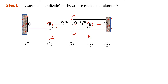Once we have the nodes, we can connect them. Between node 1 and node 2 we create element 1 using a line element. Between node 2 and node 3 we have element 2. Between node 3 and node 4 we have element 3. And between node 4 and node 5 we have element 4. So basically in this case we have 5 nodes and 4 elements.